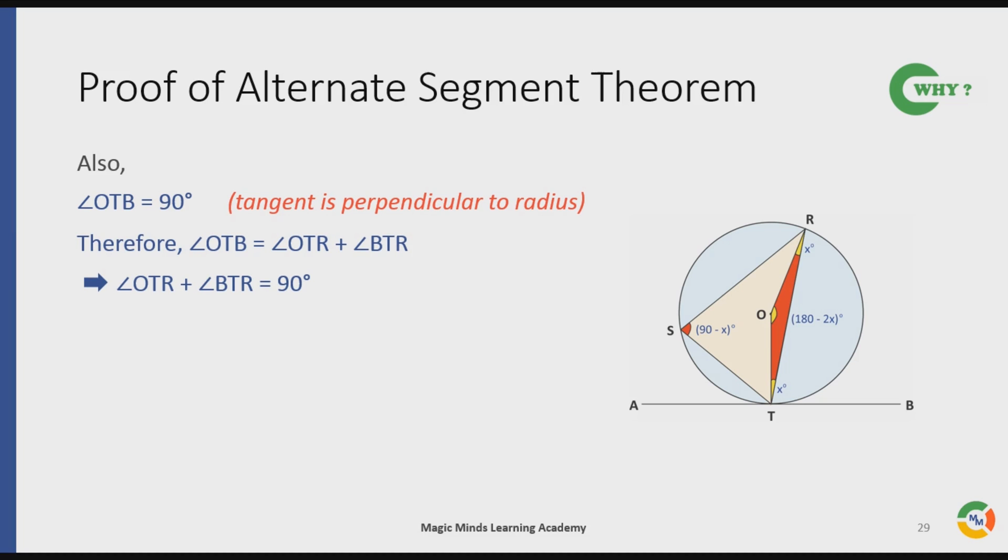Since angle OTR is x degrees, therefore x degrees plus angle BTR is equal to 90 degrees. This implies angle BTR is equal to 90 minus x degrees. Hence, angle BTR is equal to angle TSR as both are 90 minus x degrees. This is all we wanted to prove, isn't it? I hope you guys understood the why part fairly well.